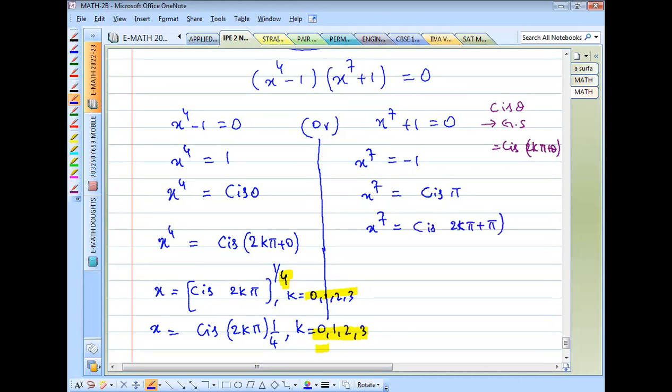For the second case, the general solution is 2kπ plus π. So x equals cis of (2kπ plus π) over 7. Here, k equals 0, 1, 2, 3, 4, 5, 6. We use seven values. After 6, it repeats. This is the whole solution.